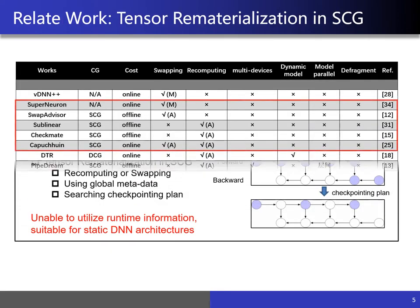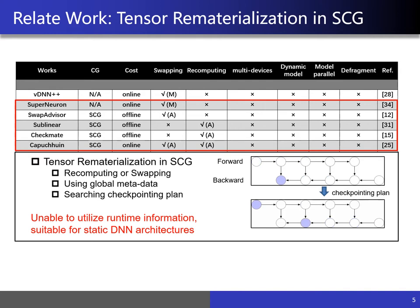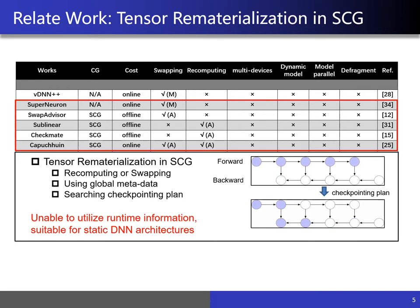The most common memory optimization technique is tensor rematerialization for static computation graphs, as shown in the figure — to evict some intermediate tensors by forward computation. For example, by releasing the intermediate tensor or swapping it to the host memory, and as the backward pass needs to reuse the evicted tensor, the backward will rematerialize them. SCG-style deep learning frameworks can use global graph information to generate a checkpoint plan by global planning before model execution. Tensor rematerialization on static graphs has a better performance advantage but cannot take advantage of runtime information and is not friendly to dynamic neural networks.